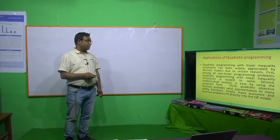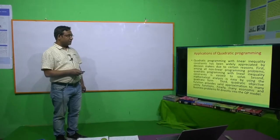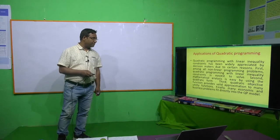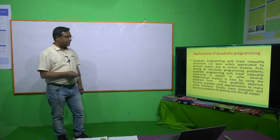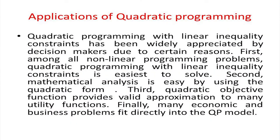The solution of QPP by using the BILS method is very easy and easy to understand. BILS method is also a famous method for solving quadratic programming problems. There is another method known as Wolf's method, which uses the Kuhn-Tucker conditions, modified by Wolf, and then solves the QPP using the simplex method.